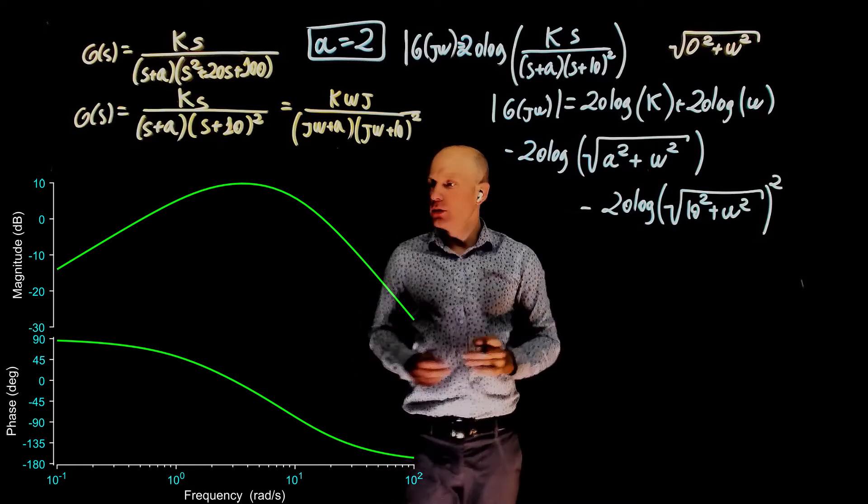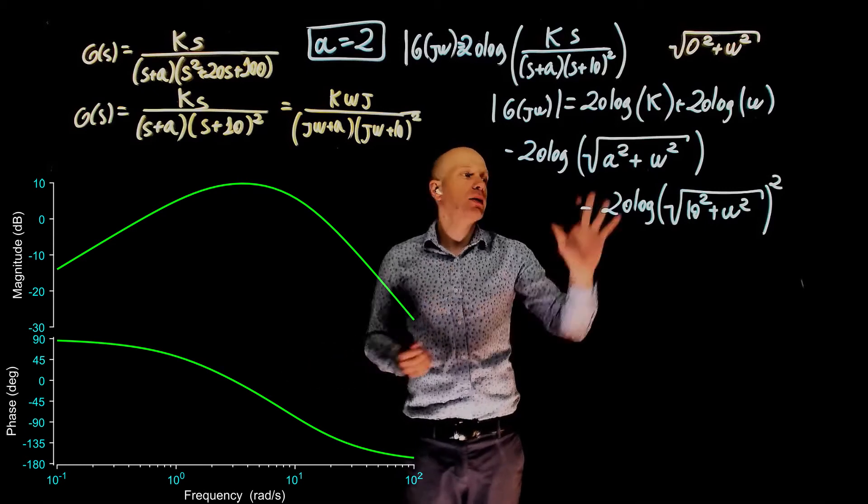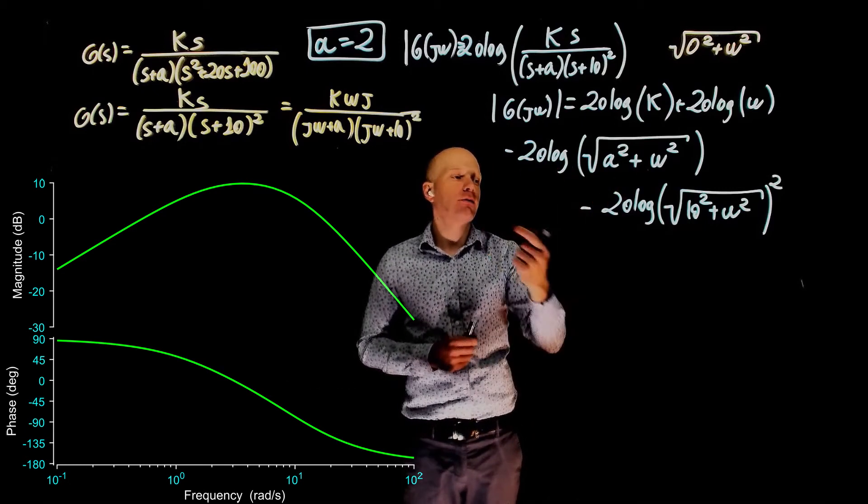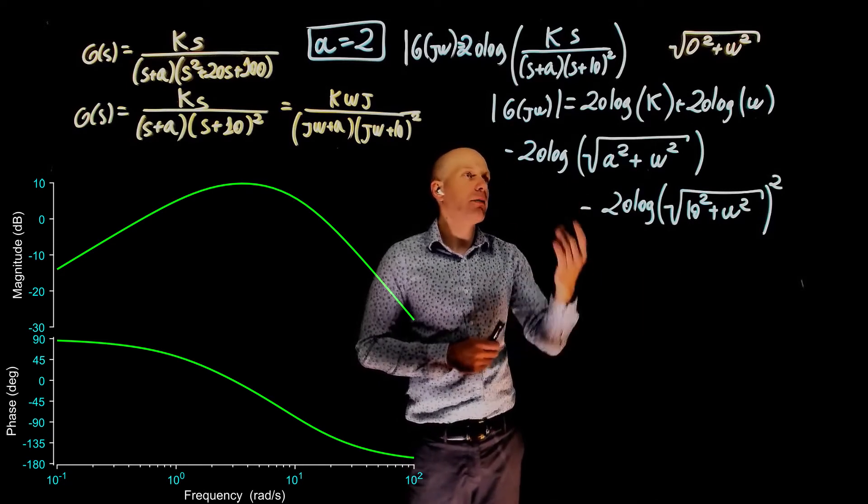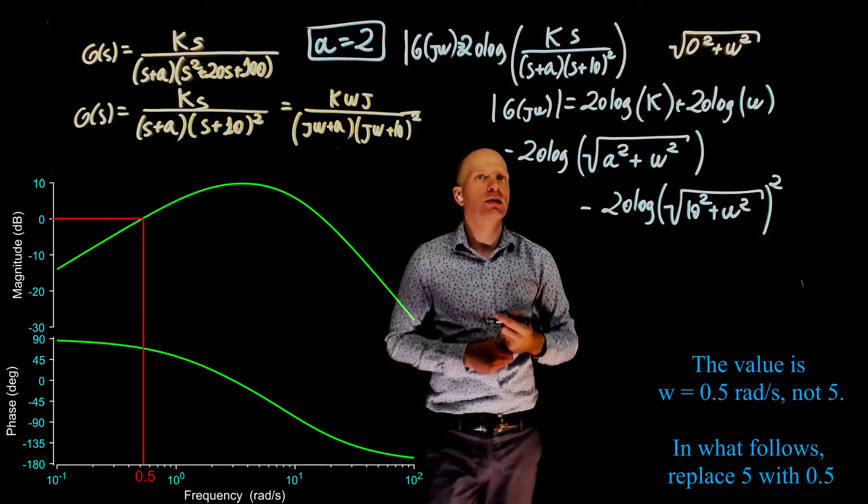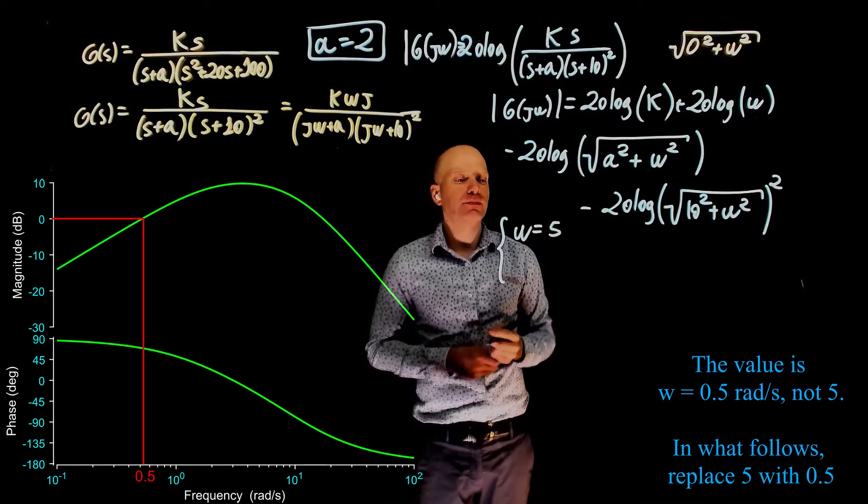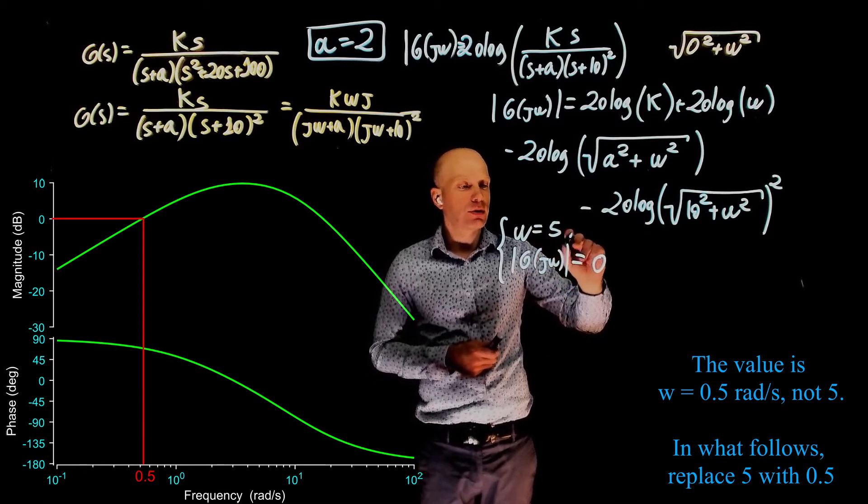Now that we have an expression for the magnitude, we can pick a point from our Bode plot. Any point on the magnitude plot must satisfy this equation. For simplicity, we can take the value of omega that makes the magnitude zero. That value happens to be 5 radians per second. At omega equals to 5, g j omega equals to zero.